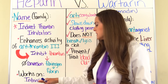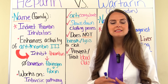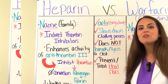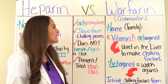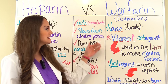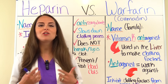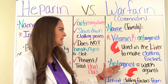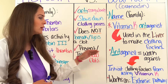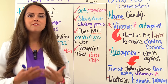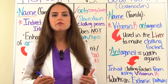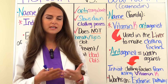Heparin works on the intrinsic pathway of coagulation, which means this pathway is activated whenever there's internal trauma to the vascular system. On the flip side, warfarin — also called coumadin — is part of the family of the vitamin K antagonists. Vitamin K is used in the liver to make clotting factors. The word antagonist means it works against, so this medication is going to inhibit clotting factors from using vitamin K. Warfarin works on the extrinsic pathway of coagulation, which is activated when there's external trauma.